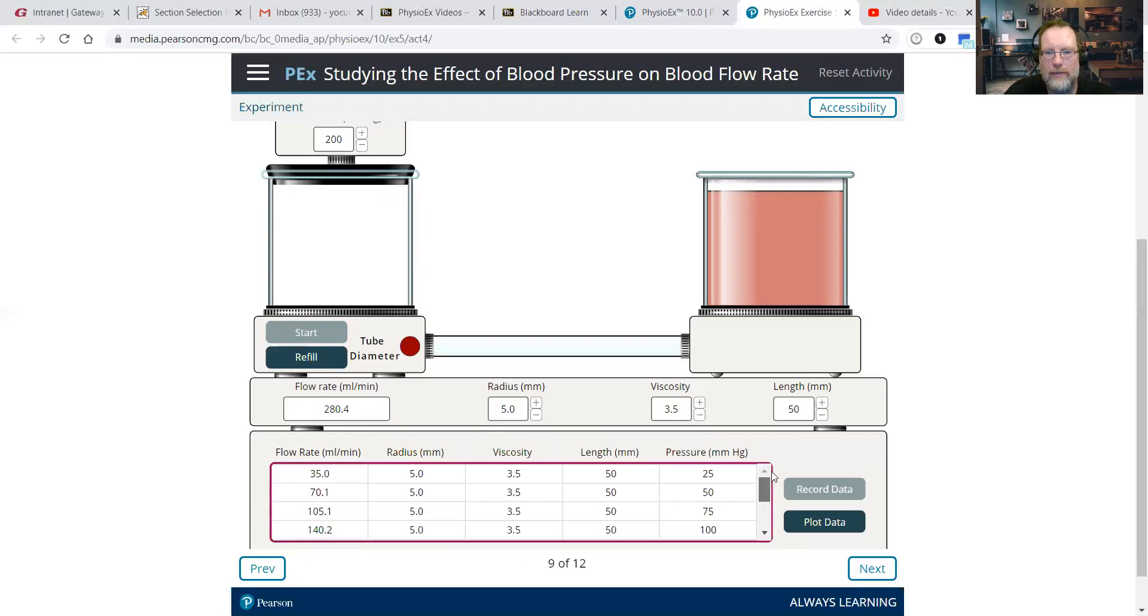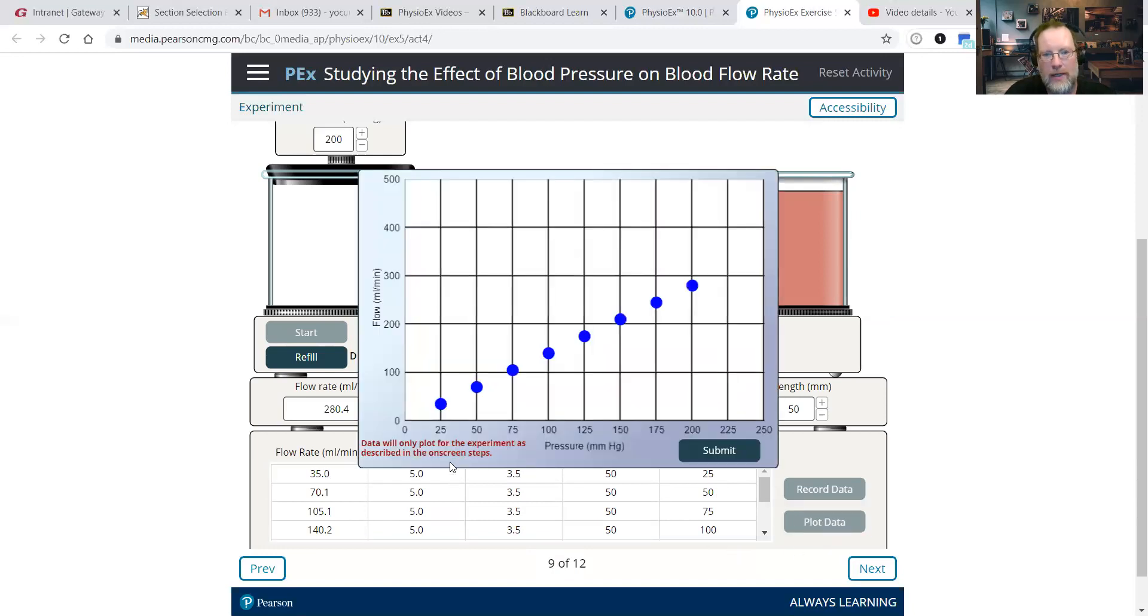We collected all of our data. 25 increments increase in pressure. 25 millimeters of mercury increment increases. We saw a 35 milliliter per minute increase in flow rate. So we plot that data. Look at that nice line. Very linear. Very predictable. It may just go to infinity.